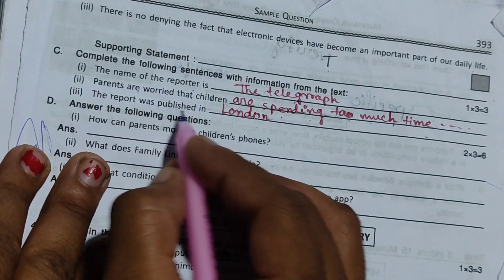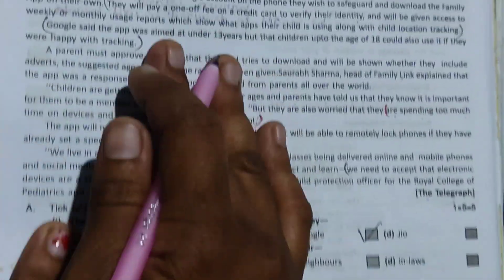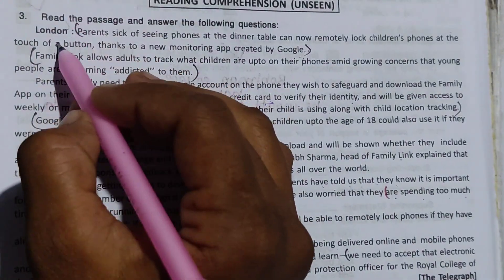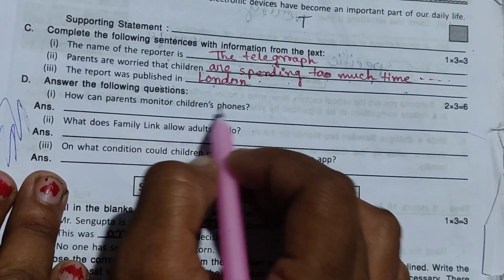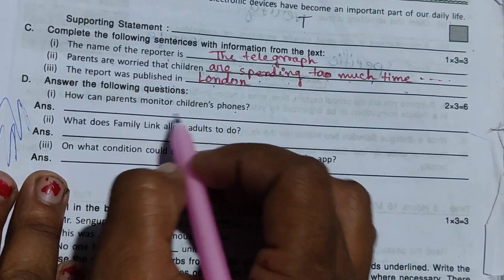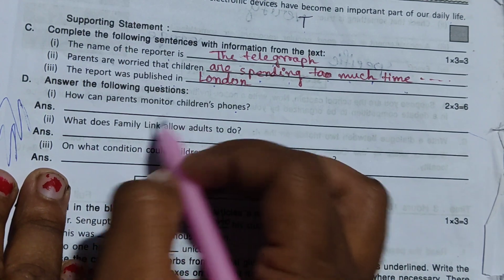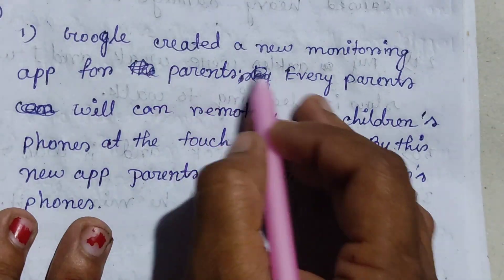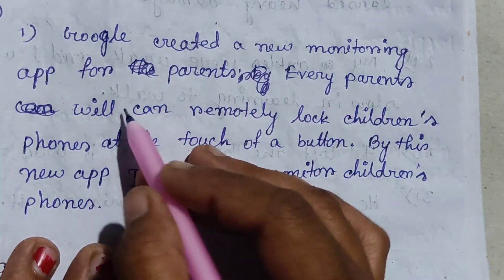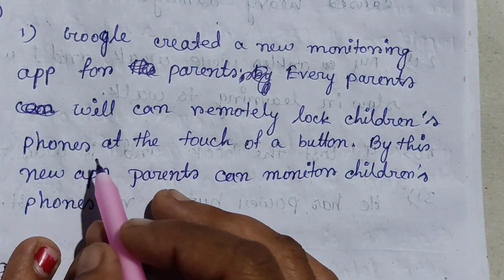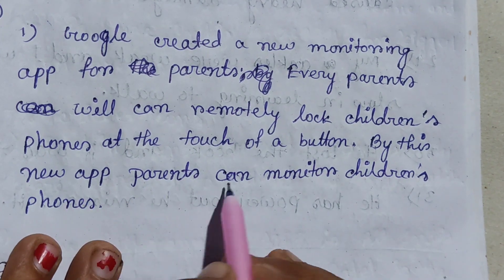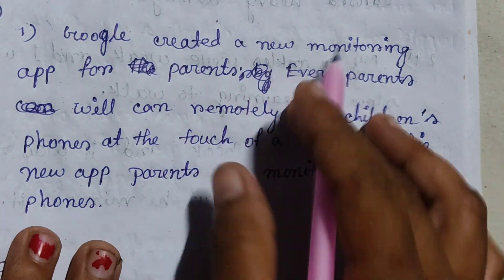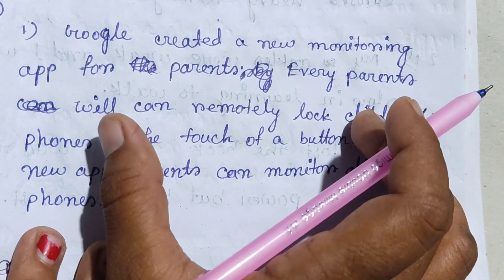The report was published in London. How can parents monitor children's phones? Google created a new monitoring app for parents. Every parent can remotely lock children's phones at the touch of a button. By this new app, parents can monitor children's phones.